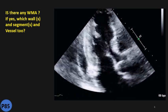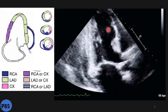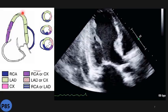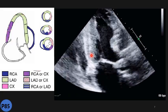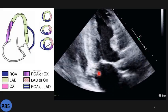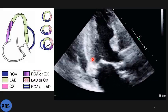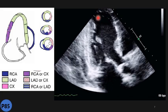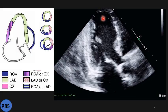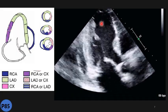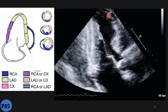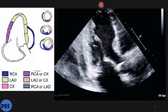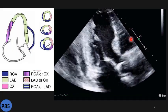Next case: here we have apical 3-chamber. We have the posterior wall — also called inferolateral wall — basal, mid, and apical, showing normal kinetic or maybe slightly hyperkinetic. The apex shows thickening and excursion moving toward the inside, and the myocardium becomes thick. Apical and peri-apical segments show the same thickening and movement toward the center.